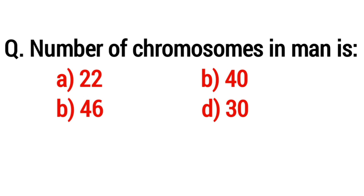Bonus question: the number of chromosomes in man is — option A, 22; option B, 40; option C, 46; option D, 30. If you know this answer you can tell me in the comment section. Thank you.